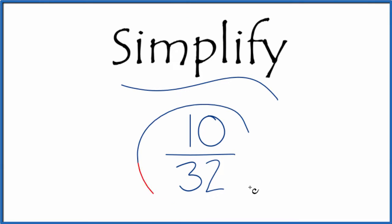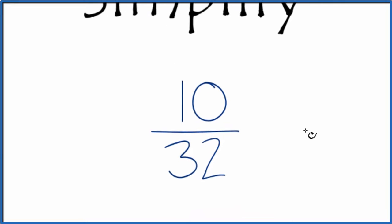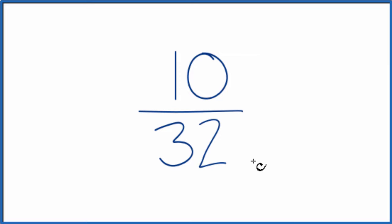Let's simplify the fraction 10/32. Here's how we do it. We're looking for another fraction, an equivalent fraction, that has the same value as 10 divided by 32, just in lowest terms.